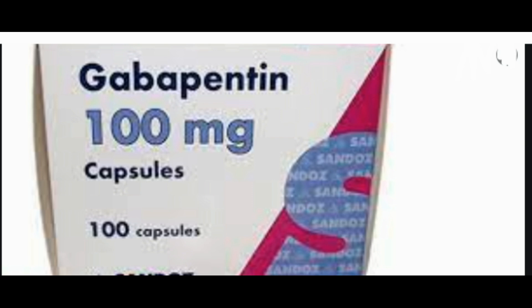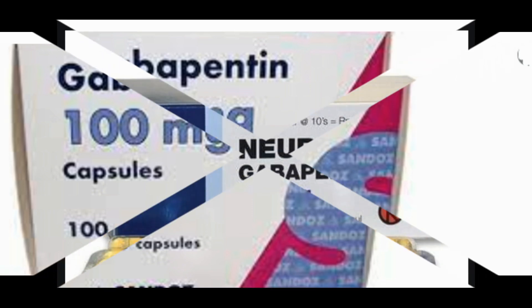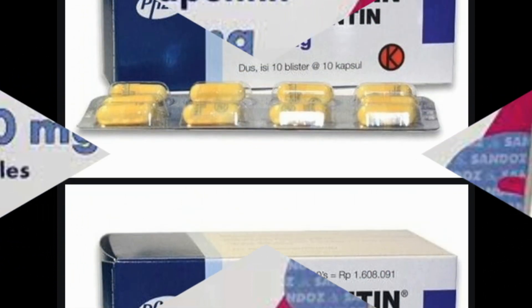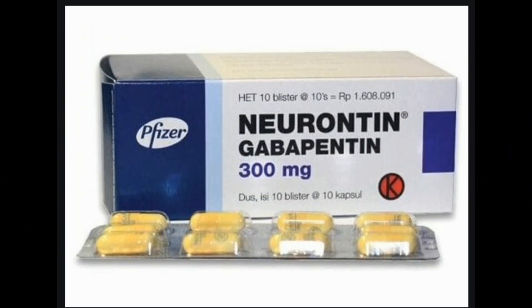Gabapentin is an anticonvulsant drug typically used to relieve seizures. It is not fully known how gabapentin works to relieve muscle spasticity. Gabapentin is available in brand name and generic versions.